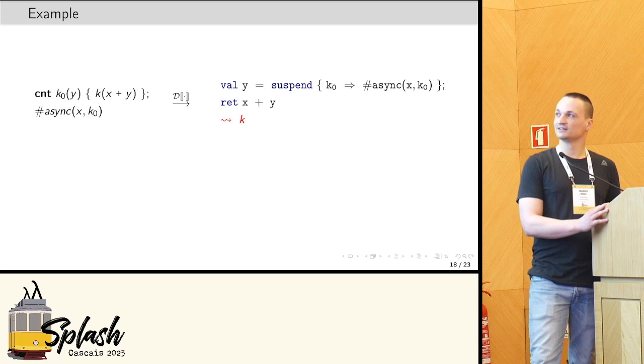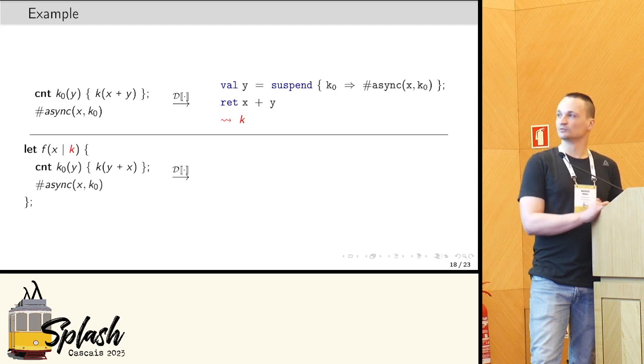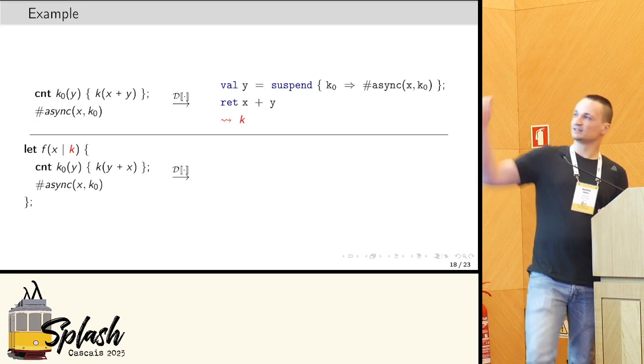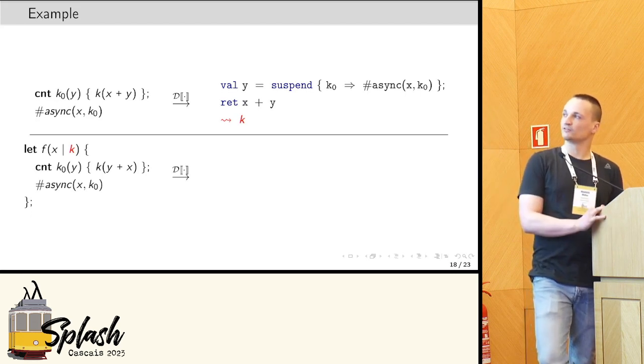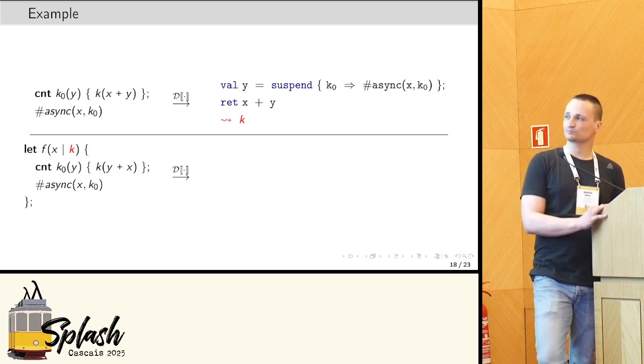And, finally, now that we have this body of the function we have seen translated back, we can actually translate back the whole function. As you can see, the body of the function returns to K, which is exactly the continuation, which is the parameter of the function.